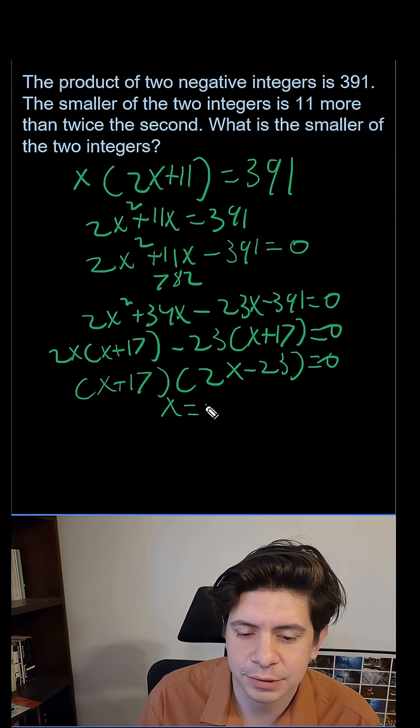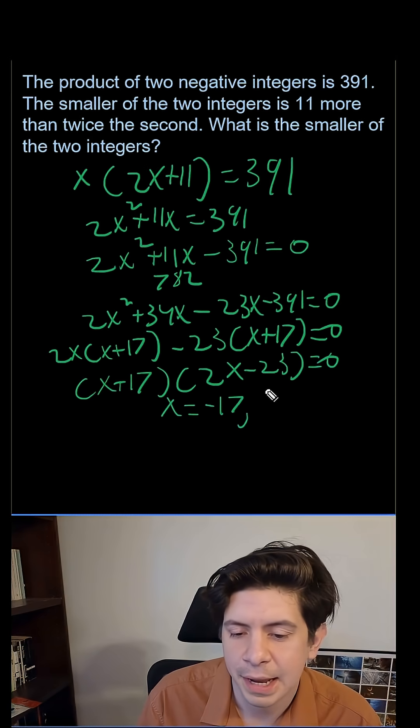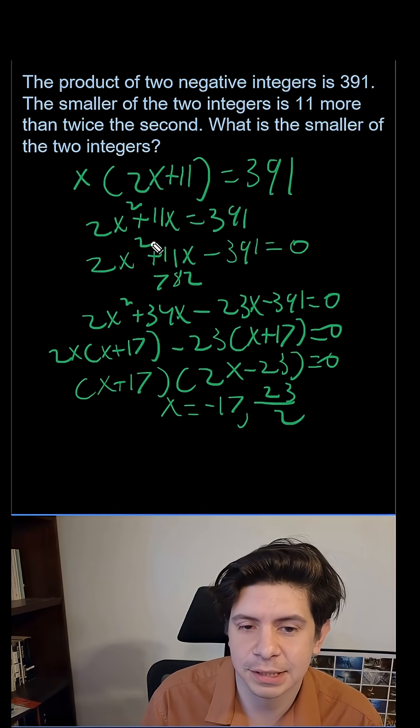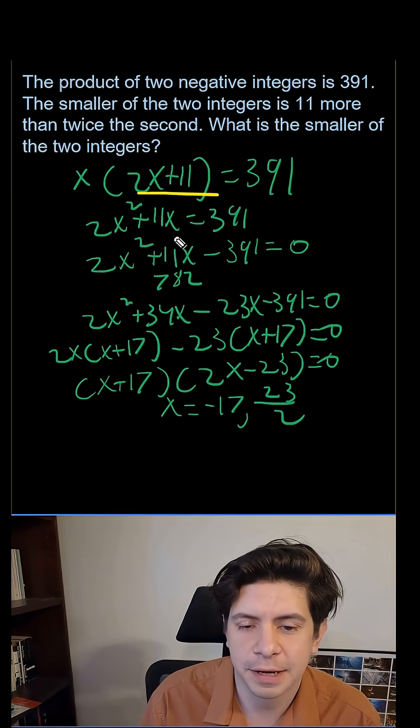So our answers are x equals negative 17 and 23 over 2. But we're told we're looking for the negatives. So it's really the bigger one is negative 17. You plug that in here to find the smaller value, right? Because that's what we're looking for.